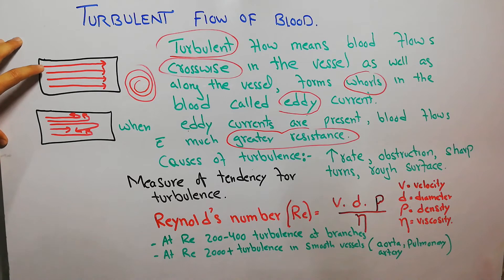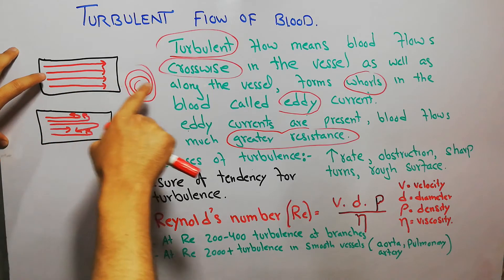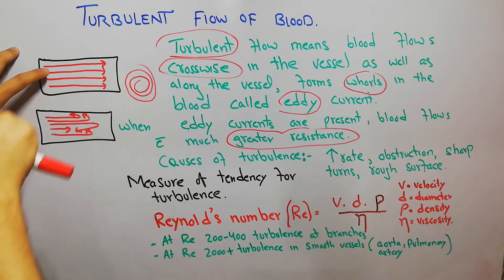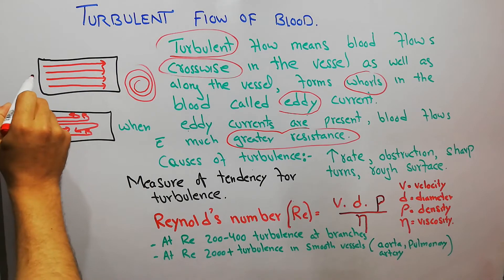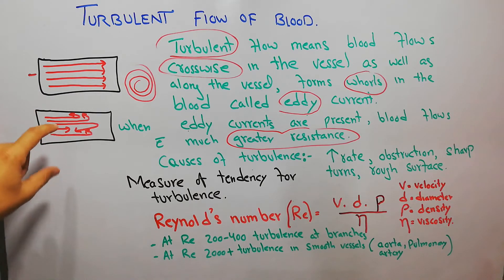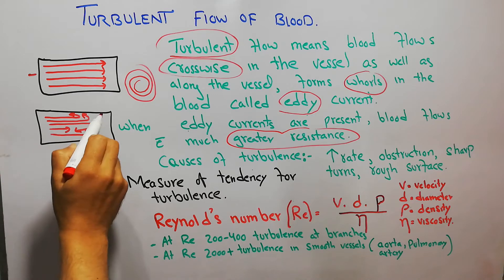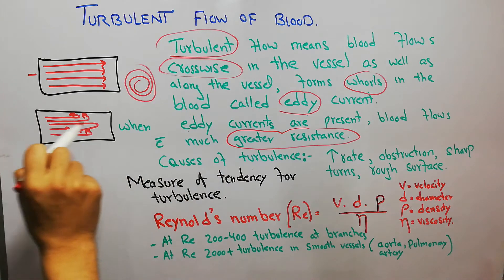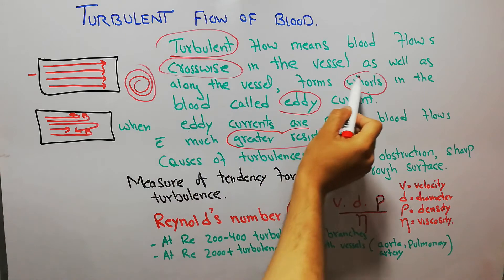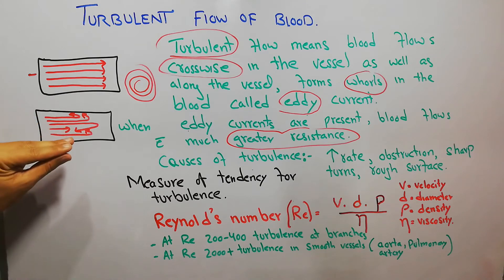In laminar flow, blood flows smoothly along the vessel, each layer maintaining a regular distance from adjacent layers and the vessel wall, with the central layer in the center of the vessel. All those rules of laminar flow are not followed in turbulent flow — the blood moves crosswise, forms whorls, and the layers do not maintain regular distances from each other.